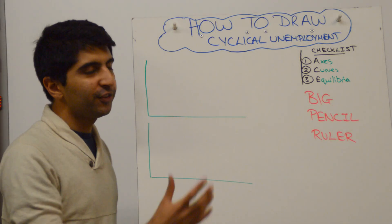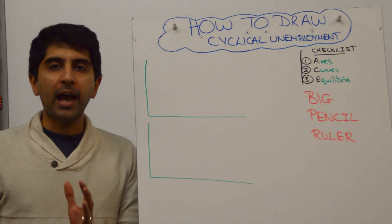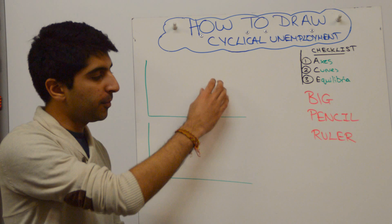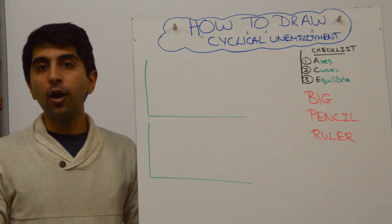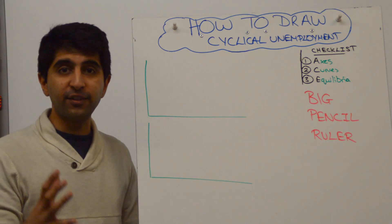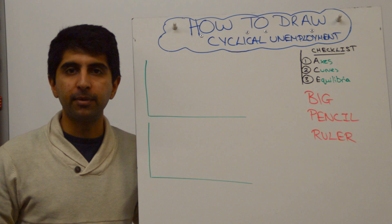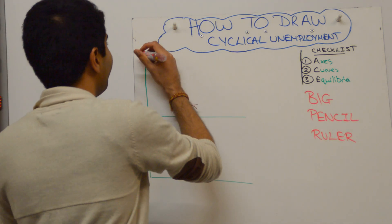Hi everybody! You want to show cyclical unemployment. How do you do it? Well, you can use the classical model or you can use the Keynesian model. All you're looking to show is a shift to the left of aggregate demand. Simple as that. Let's look at the classical model first.